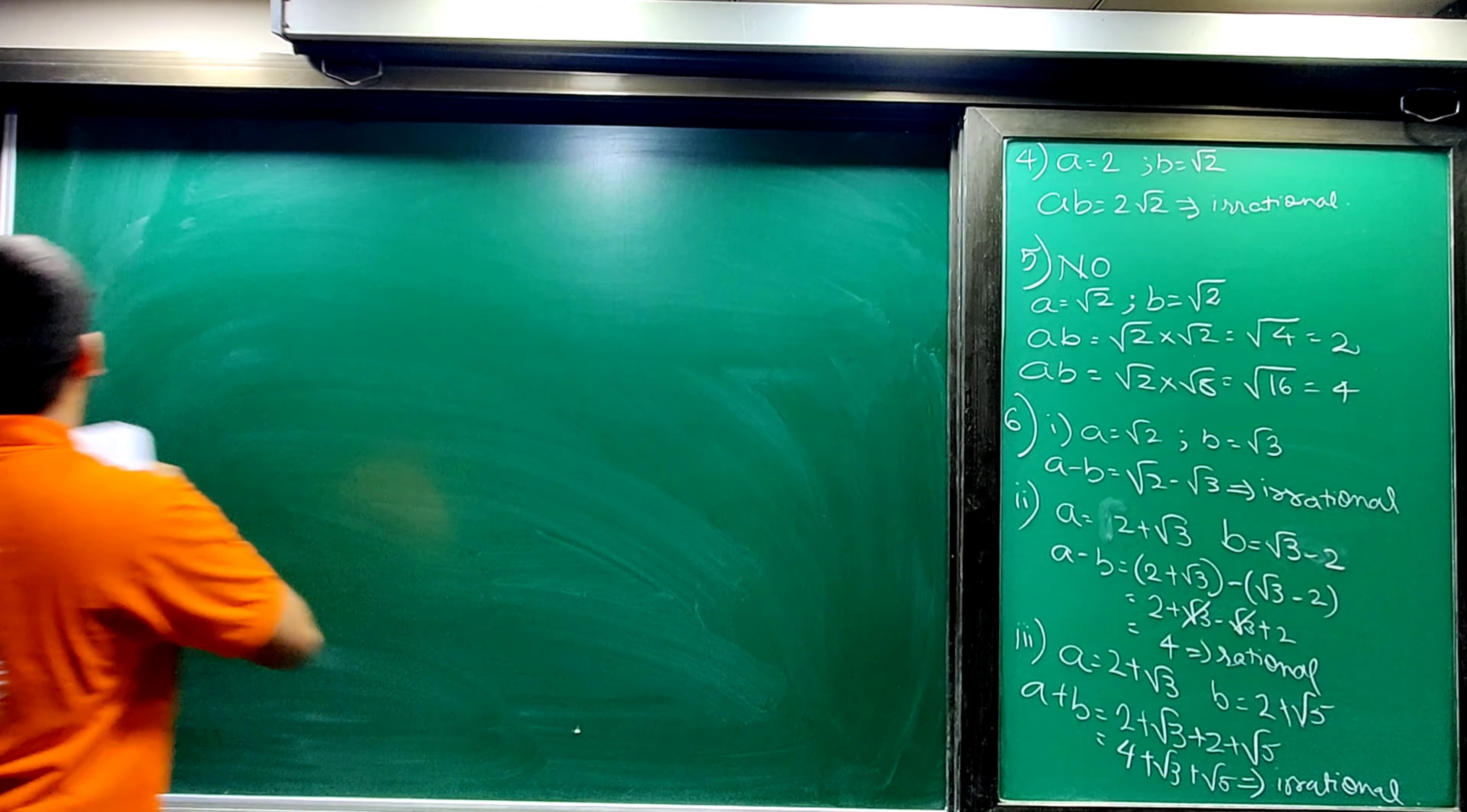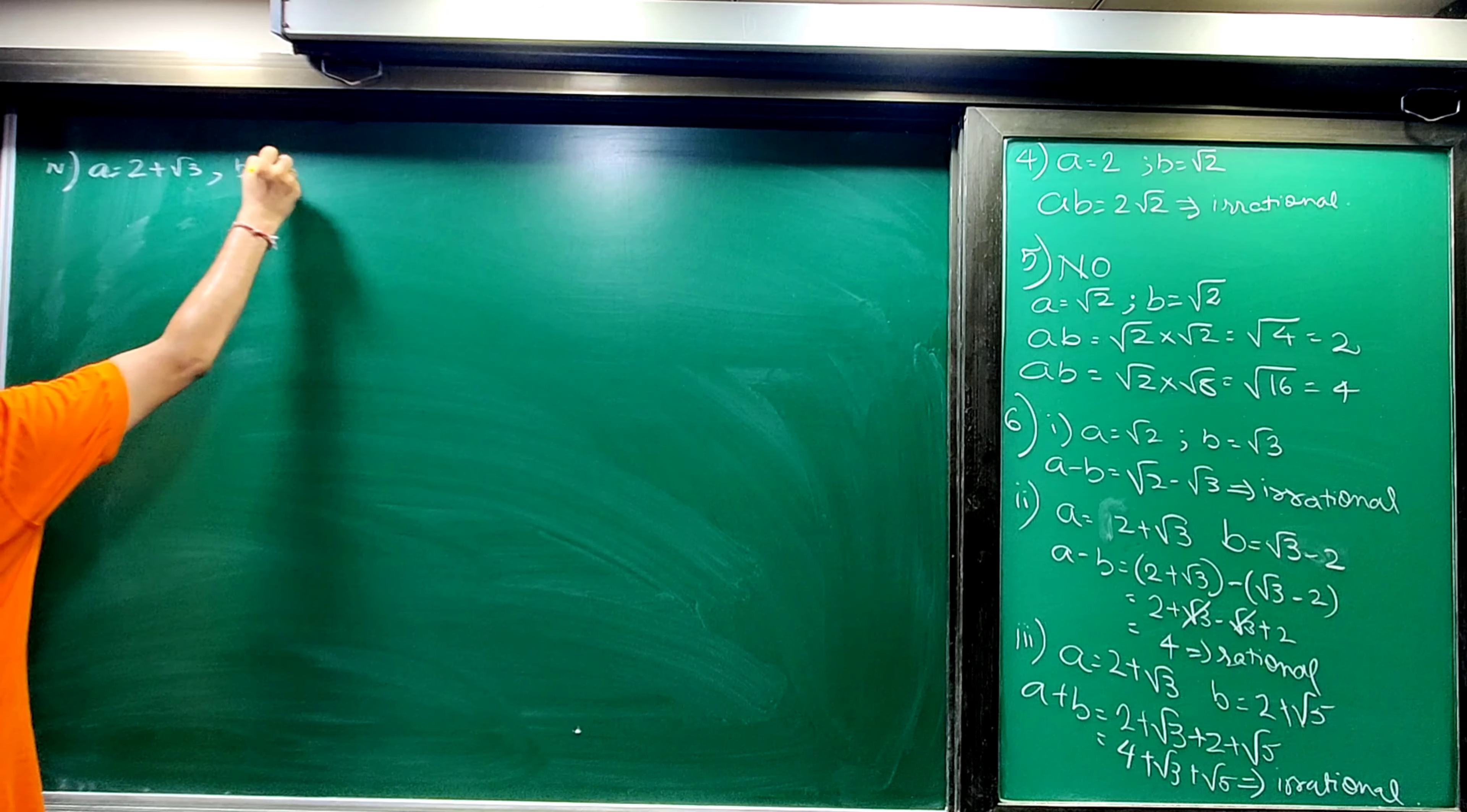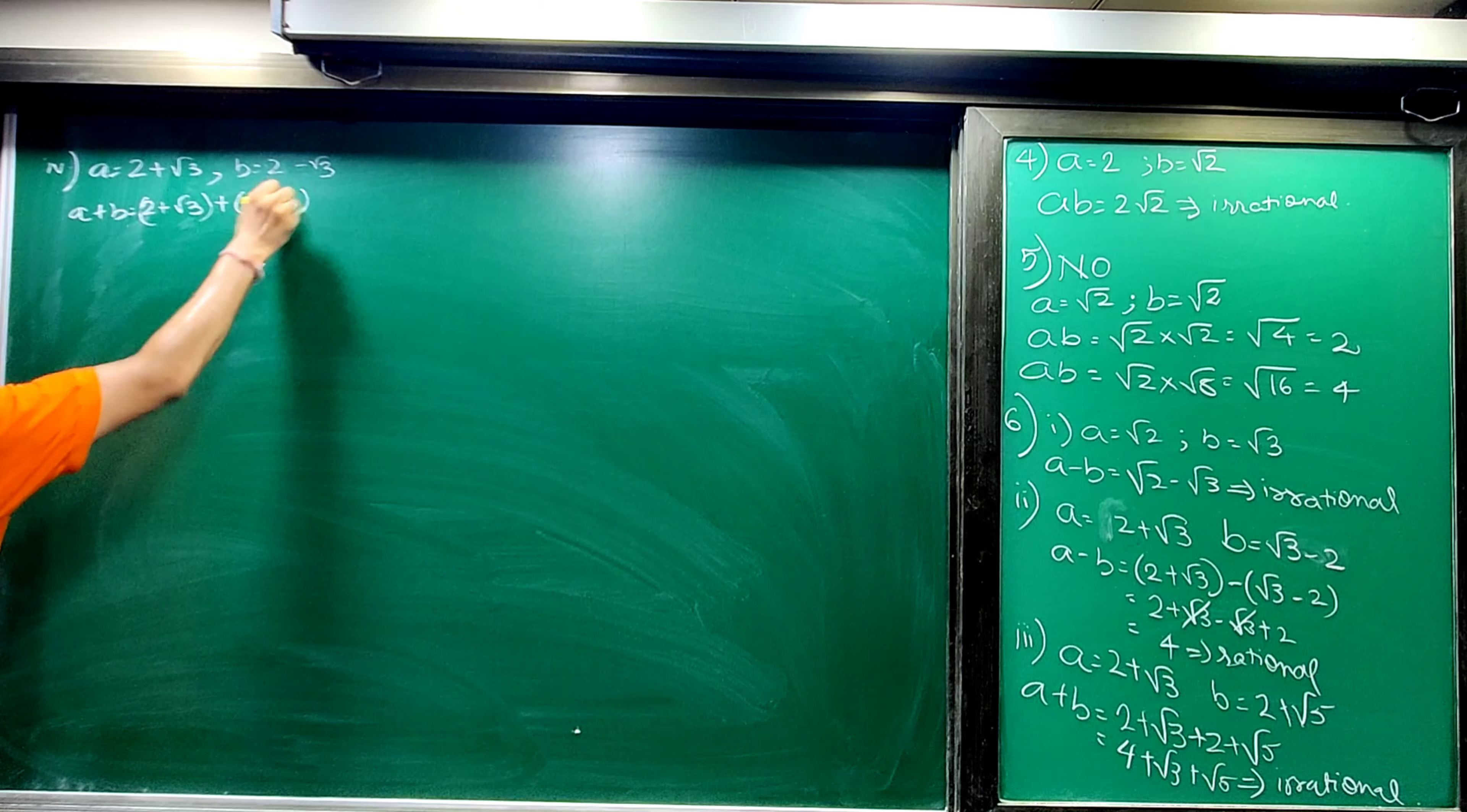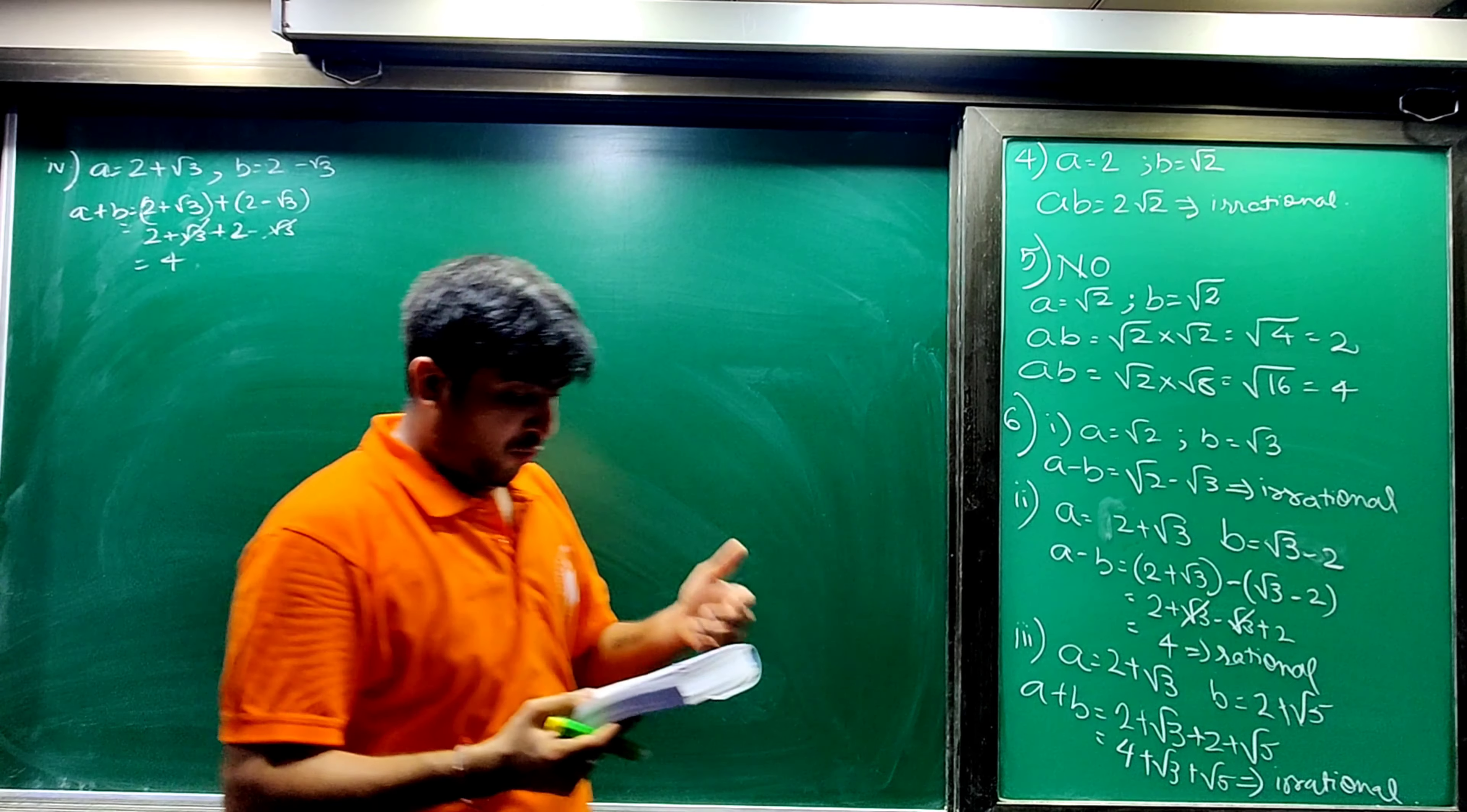Then sum number 4 in 6th: sum is a rational number. Sum should be rational number. So let a is 2 plus root 3 and b is 2 minus root 3. Now sum of these two: a plus b, 2 plus root 3 plus 2 minus root 3. Root 3 minus root 3 gets canceled, and this gives answer 4.